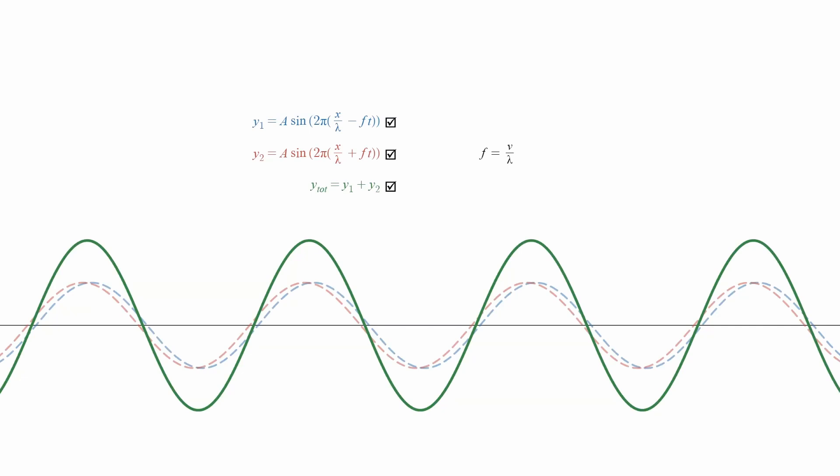Since nodes and antinodes always occur in the same places, the result is called a standing wave. The distance between two consecutive nodes or two consecutive antinodes is equal to half a wavelength.